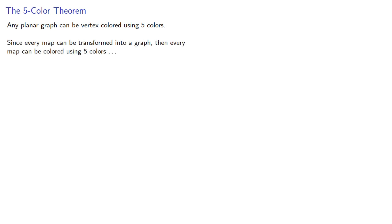So any planar graph can be vertex colored using five colors. Since every map can be transformed into a graph, then every map can be colored using five colors, provided the map can be converted into a planar graph.